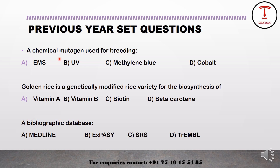Practice questions: 'A chemical mutagen used for plant breeding' — EMS (ethyl methyl sulfonate) is the chemical mutagen; UV is a physical mutagen; methylene blue is a dye; cobalt is a metal. So EMS is the answer. 'Golden rice is a genetically modified rice variety for the biosynthesis of' — beta-carotene, which is a precursor of vitamin A. So golden rice is engineered for beta-carotene biosynthesis. 'What is a bibliographic database?' — the answer is MEDLINE.